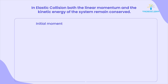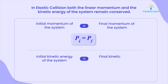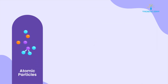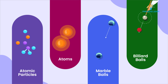Initial momentum of the system equals final momentum of the system: Pi = PF. Initial kinetic energy of the system equals final kinetic energy of the system: KE initial = KE final. Collisions between atomic particles, atoms, marble balls, and billiard balls are examples of elastic collision.